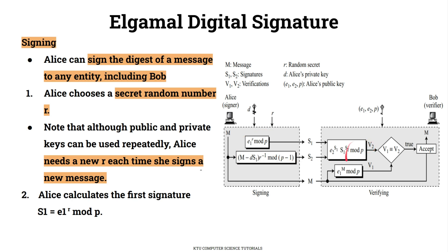This is the signing process and this is the verification process. Alice will sign the message M. Alice can sign the digest of a message and send it to any entity including Bob. Alice also chooses a secret random number R. Alice needs a new R each time she signs a new message, along with her private key.